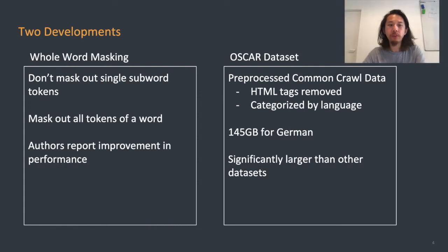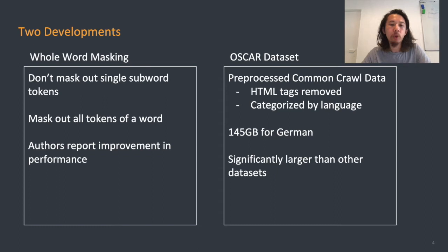There are two more recent developments that our work capitalizes on: whole word masking and the OSCAR dataset. In whole word masking, there's a different masking regime used in the masked language model component of BERT training. Instead of masking out single subword tokens, in whole word masking you mask out all the tokens of a given word, and the authors report a significant improvement in performance when using this.